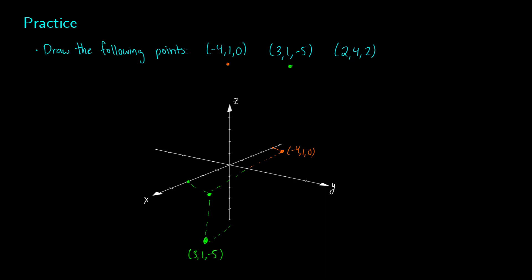The better you are at drawing, the more accurate your points will be on 3D graphs. For the final point in pink, (2, 4, 2): we go 2 in x, 4 in y, then 2 in the z direction. As you can see, it's sometimes difficult to tell in a 3D graph where the point actually is. If you imagine rotating the graph so x and y were flat, you would see it two points above the surface.